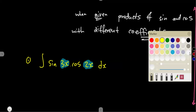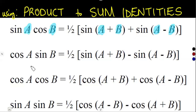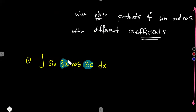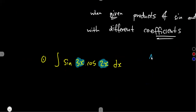We are given a product and we want to change it to a sum. The trigonometry we have is sine times cosine, so we use the identity for sine A times cosine B. We need to figure out what is our A and what is our B.